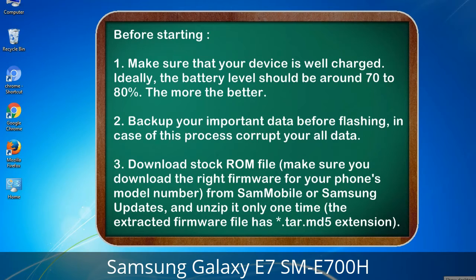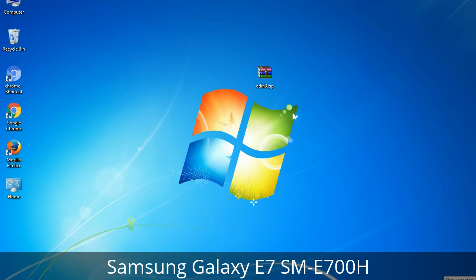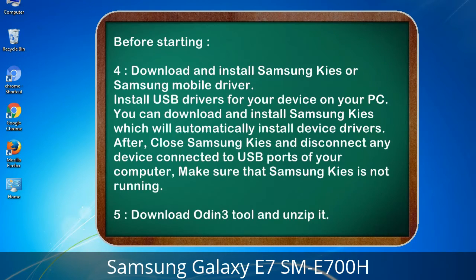Download the firmware from Sammobile or Samsung Updates and unzip it only one time. The extracted firmware file has a *.tar.md5 extension. Then download and install Samsung KIS or Samsung mobile driver to install USB drivers for your device on your PC. You can download Samsung KIS which will automatically install the device drivers.